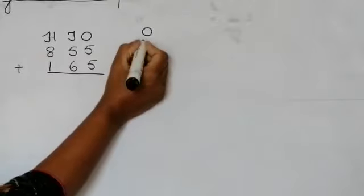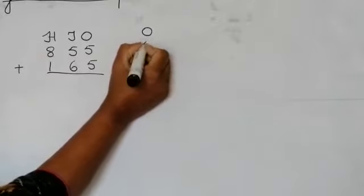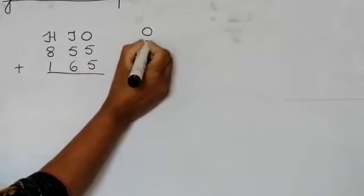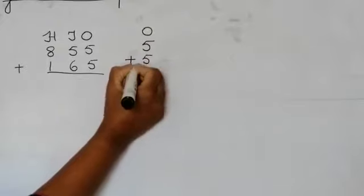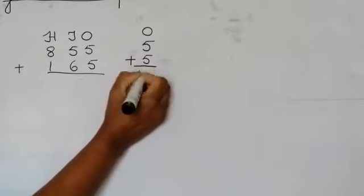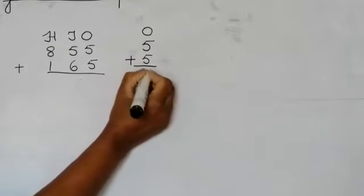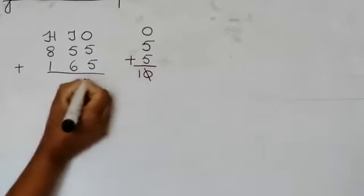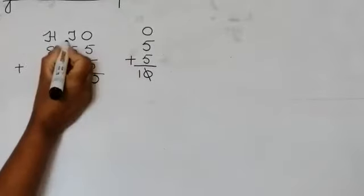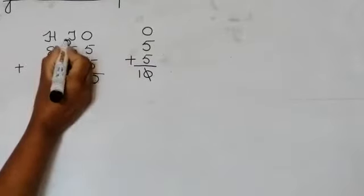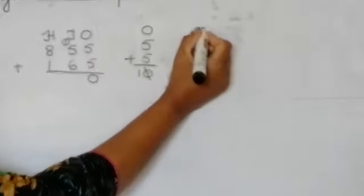So we will separate our ones first. 5 plus 5 is 10. Again we will put only 0 here and we will carry this 1 under tens, not hundreds. Remember this thing please.